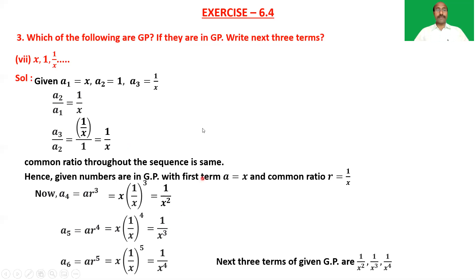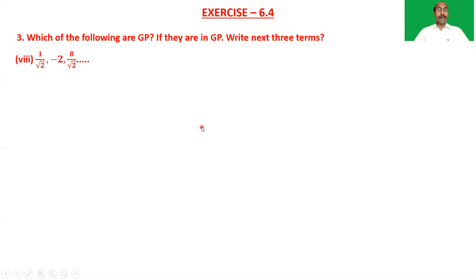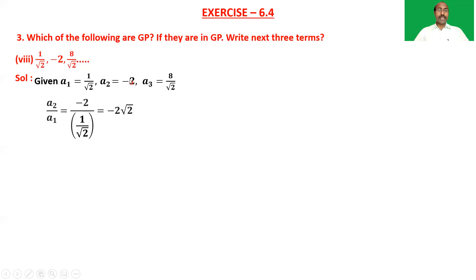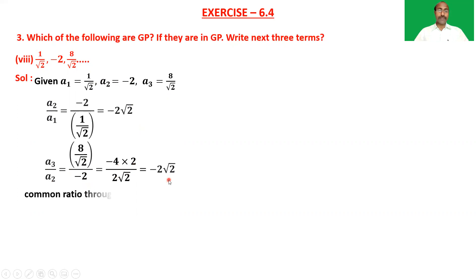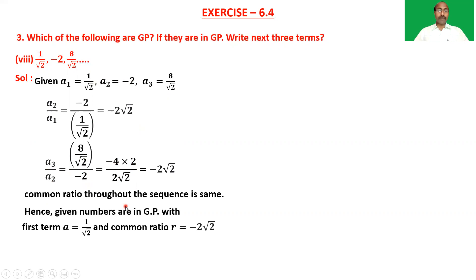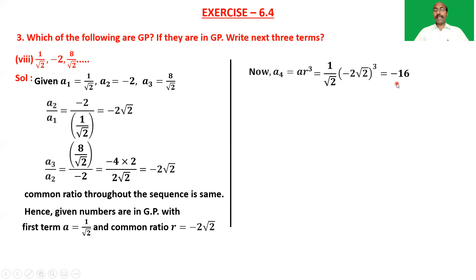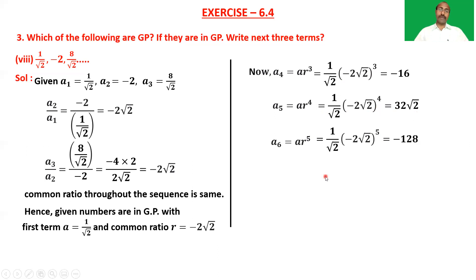Eighth sequence: 1/√2, −2, 8/√2, and so on. a₁ = 1/√2, a₂ = −2, a₃ = 8/√2. a₂/a₁ = −2/(1/√2) = −2√2. a₃/a₂ = (8/√2)/(−2) = −4/√2 = −2√2. The common ratio is the same, so the given numbers are in GP with a = 1/√2 and r = −2√2. The next three terms: a₄ = −16, a₅ = 32√2, and a₆ = −128.